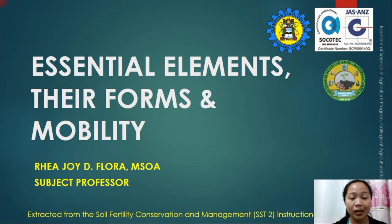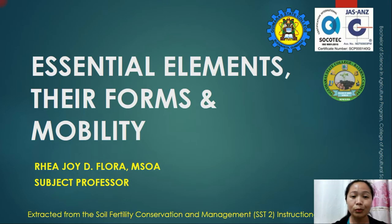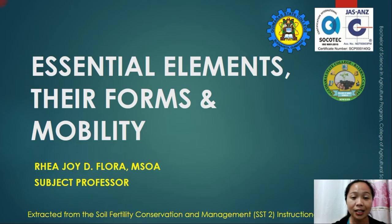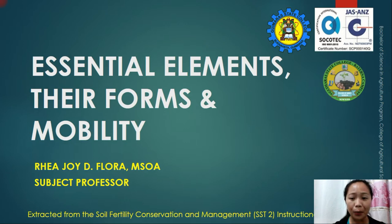In this lesson we will be dealing with essential elements, their forms, and mobility. It's actually a supplement to the previous lessons we discussed. I hope everybody recalls that there are 18 elements that plants need for growth and development. We will cover the different forms that plants can take up, because not all nutrients will be taken up if not in their uptake form, and also how nutrients move within the plant and in the soil.